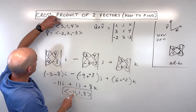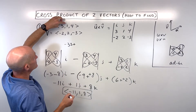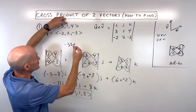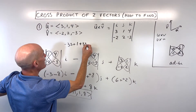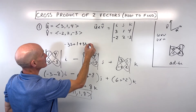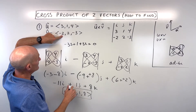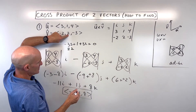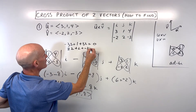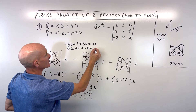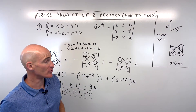So we take the x's and multiply them together: three times negative eleven is negative thirty-three, plus the y's: one times one is one, plus the z components: four times eight is thirty-two. And you can see negative thirty-three plus one plus thirty-two equals zero. We can do the same thing with vector v: negative two times negative eleven is twenty-two, two times one is two, negative three times eight is negative twenty-four. Twenty-four plus negative twenty-four is zero, verifying it is indeed orthogonal to both original vectors.